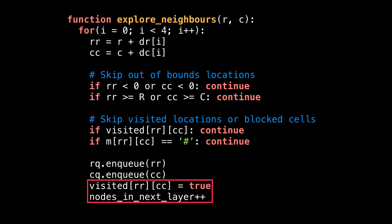When enqueuing a new position we are going to visit, make sure to mark it as visited now so that it doesn't get added to the queue multiple times in the future. Also increment the number of nodes in the next layer, which we'll be needing shortly.